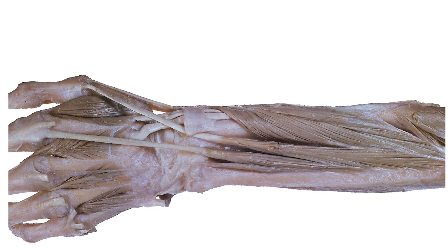These are the muscles present in the extensor compartment of the forearm. Deep to the superficial muscles of the extensor compartment, we come to the deep muscles of the extensor compartment. These include extensor indicis tendon, and also abductor pollicis longus, extensor pollicis brevis, and extensor pollicis longus — whose tendons we can identify in the superficial strata, while their origins are in the deep layer. Thank you, dear friends, see you soon with a new video.